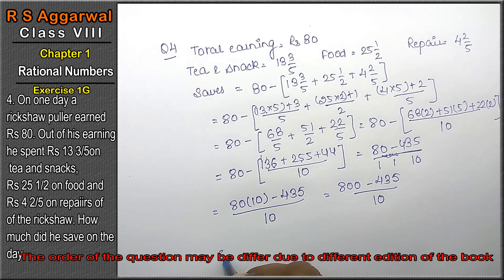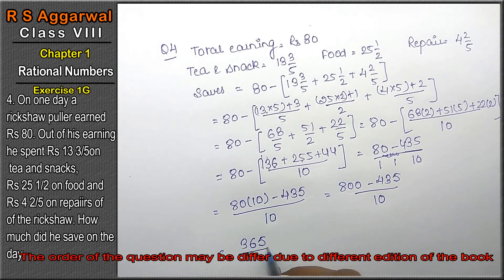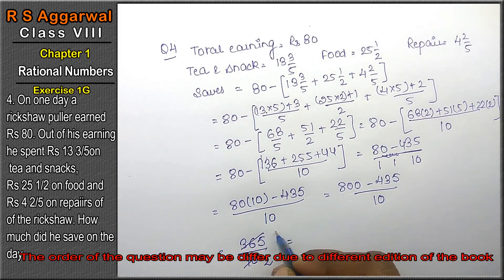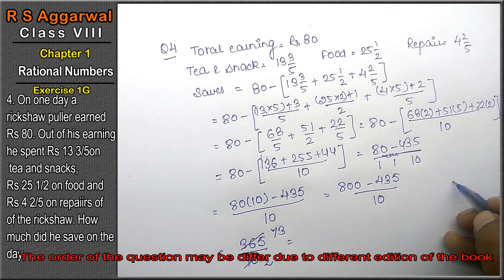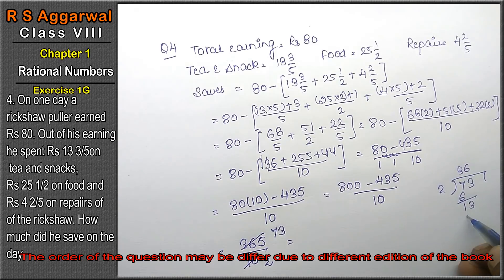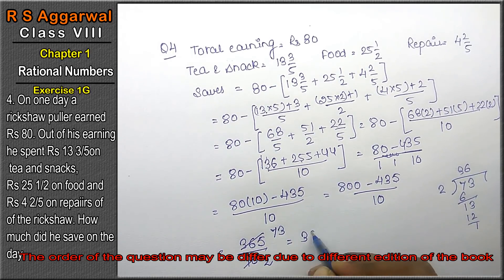800 minus 435: from 10 subtract 5 gives 5; borrow to get 9-3=6 then 7-4=3, giving 365 upon 10. Dividing 365 by 10: 10×36=360, remainder 5, so we get 36 and 1/2. The answer is Rs. 36 and 1/2.